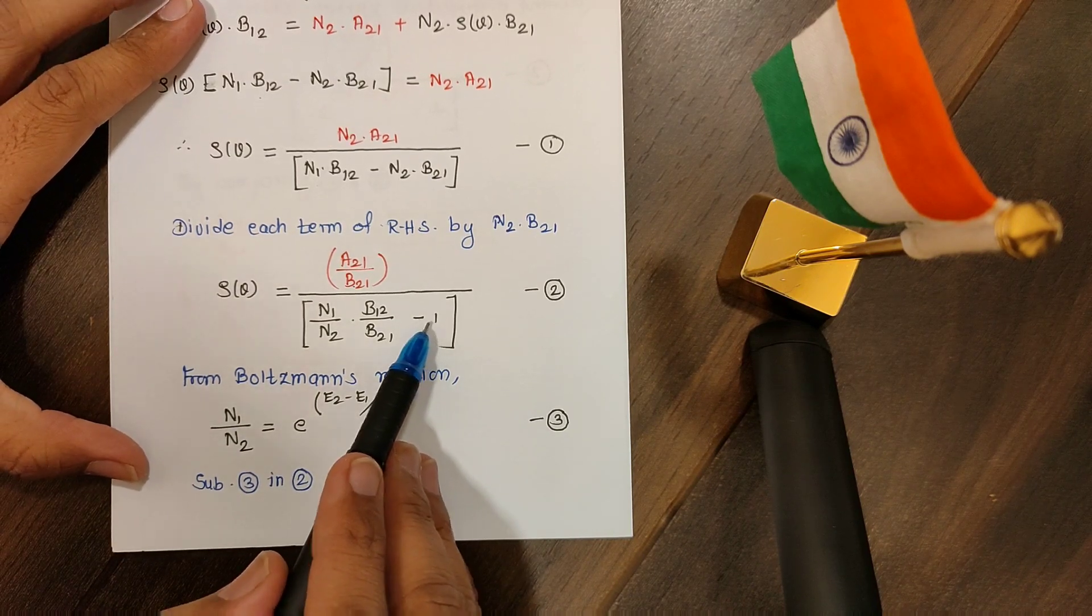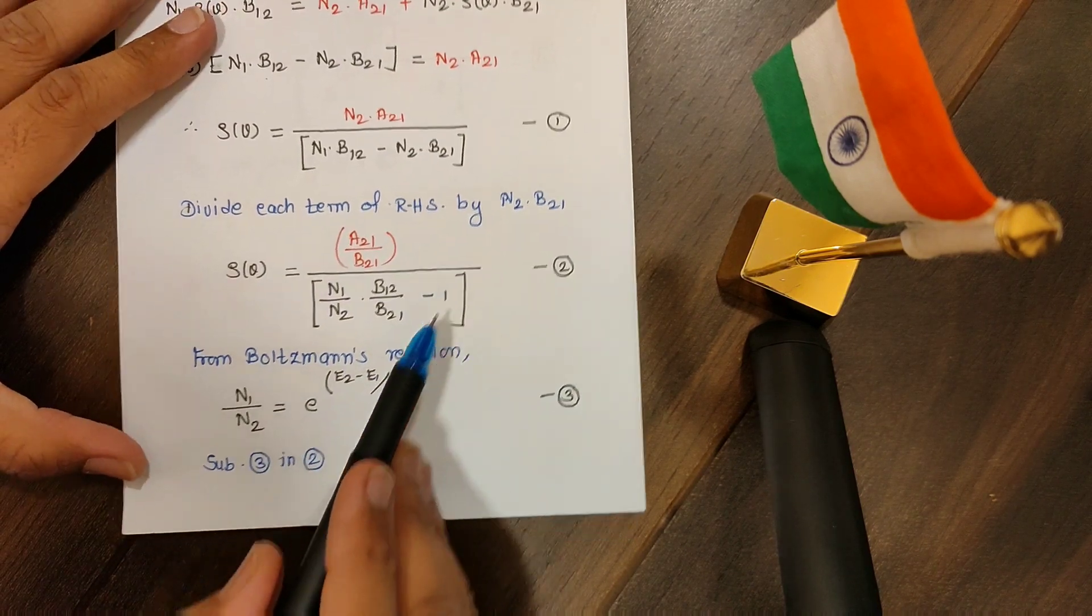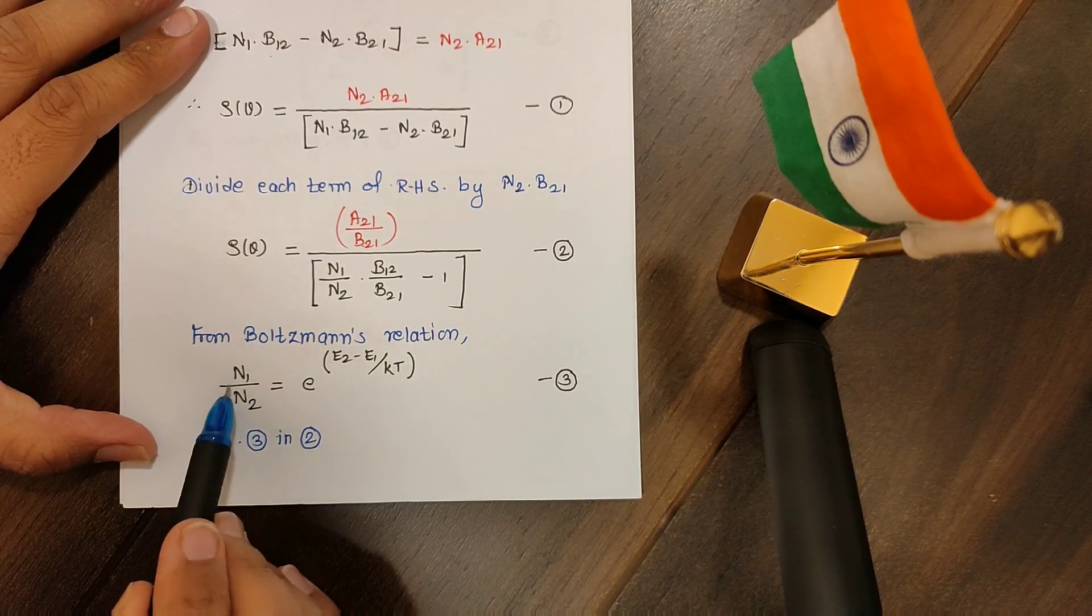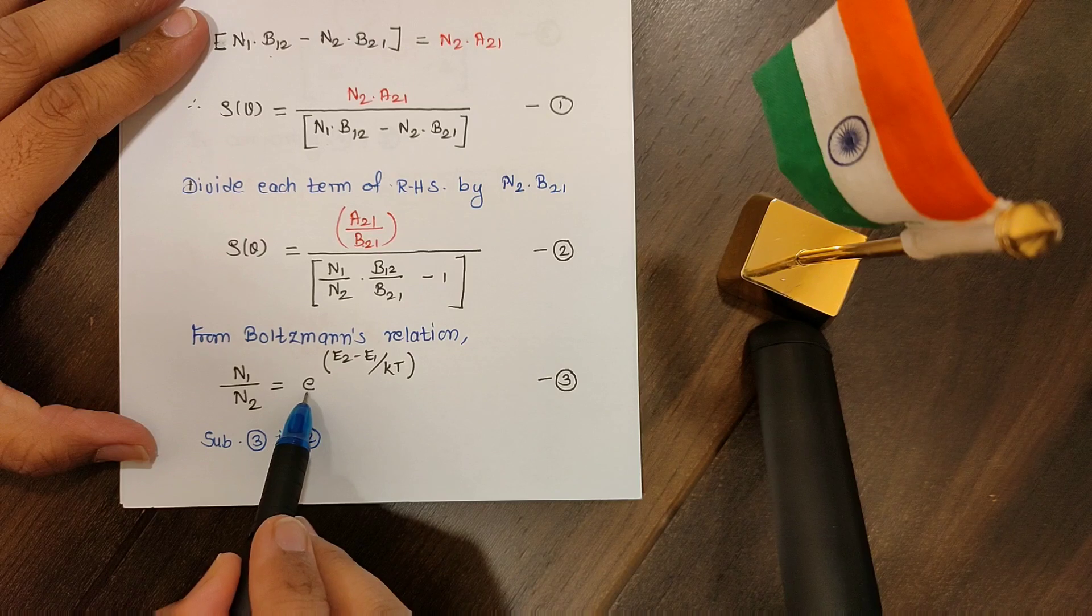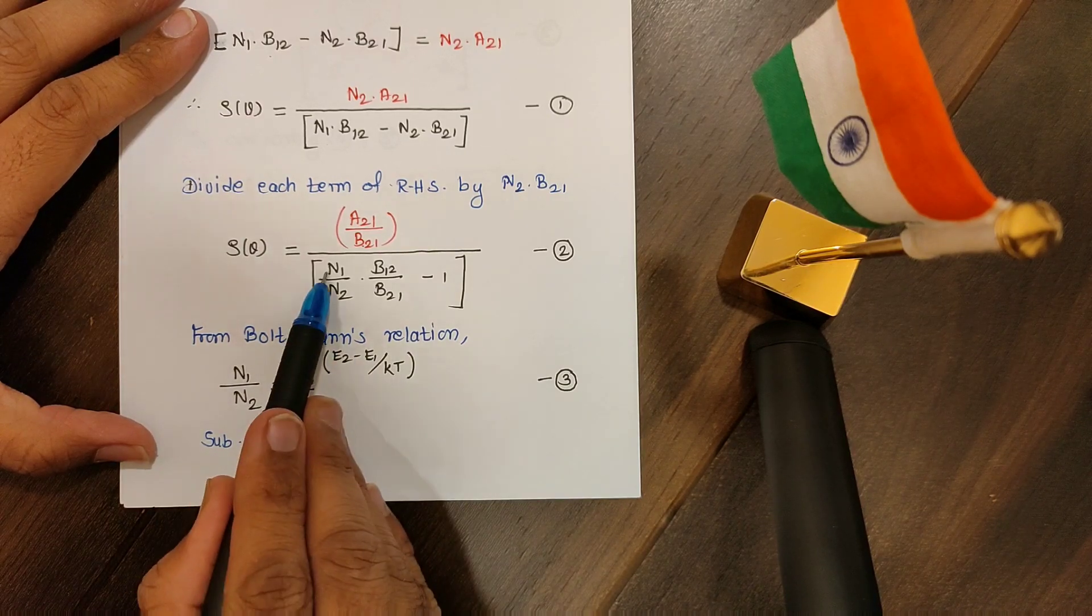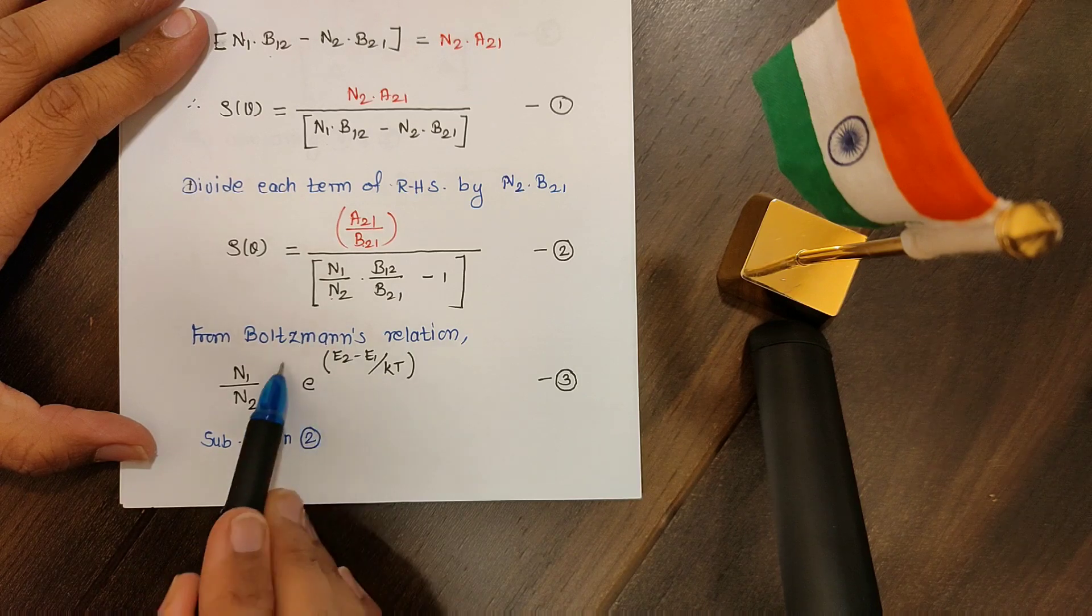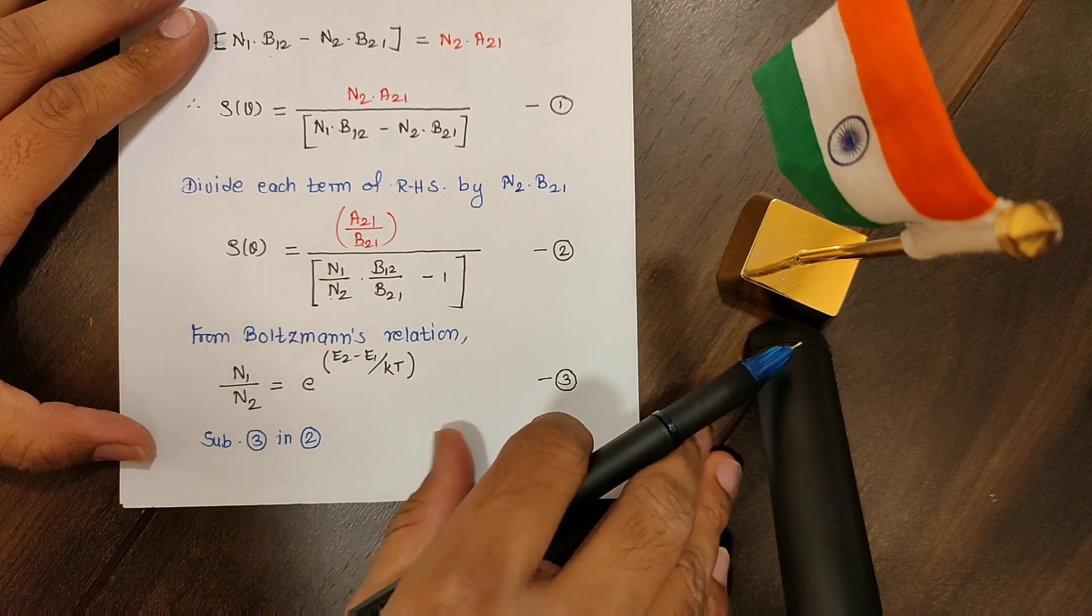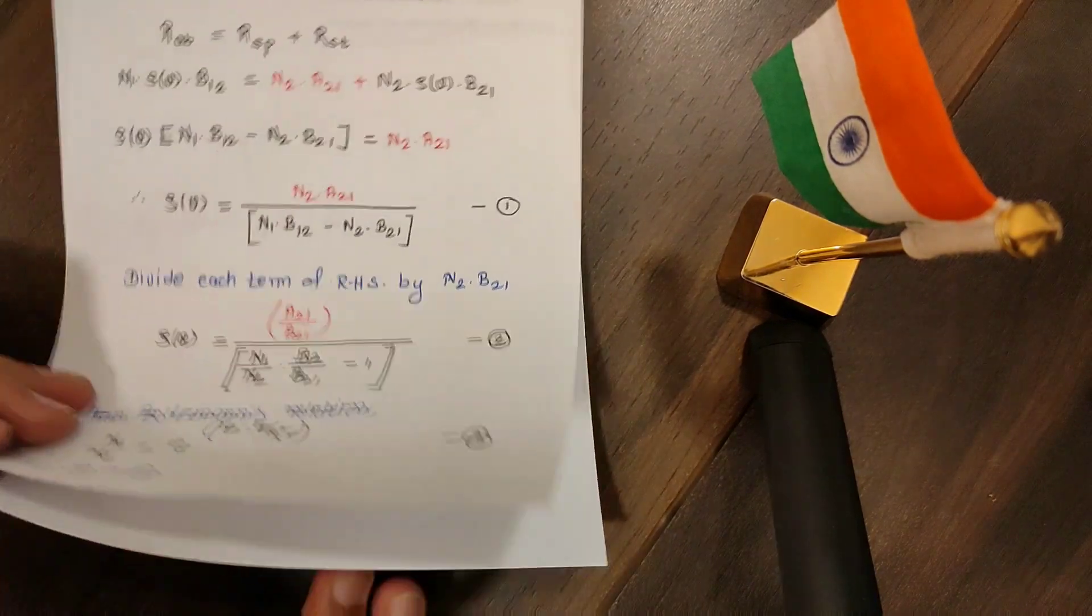Now why I divided by this term only? We have Boltzmann's relation, which says that n1 over n2 is equal to e raised to E2 minus E1 over kT. So instead of this n1 over n2, we can substitute this result. So we have to substitute result number 3 into result number 2.